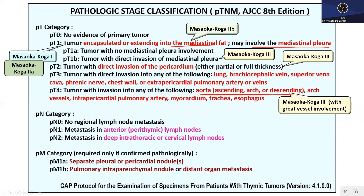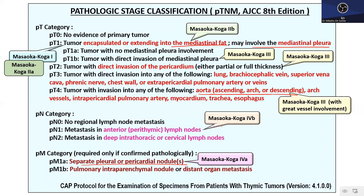For nodal staging, N1 and N2 categories exist. Masaoka-Koga stage 4a — separate pleural and pericardial nodules — corresponds to M1a in TNM. M1b, along with nodal involvement categories, covers both lymphatic dissemination (Masaoka-Koga 4b) and hematogenous dissemination (Masaoka-Koga 4b). The two systems look similar but different Masaoka-Koga categories cannot be directly transposed onto TNM.